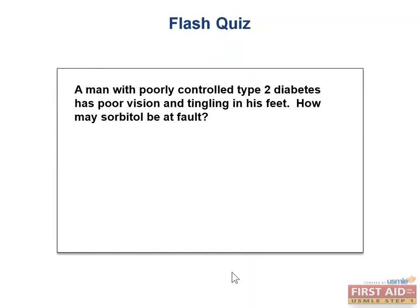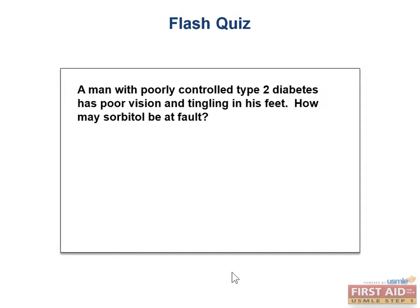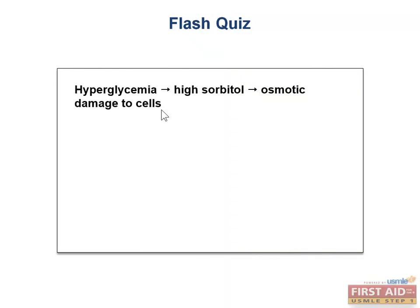Let's do a quick flash quiz. A man with poorly controlled type 2 diabetes has poor vision and tingling in his feet. How may sorbitol be at fault? Hyperglycemia can lead to sorbitol levels accumulating and causing osmotic damage within the cell. This is most prominent in cells that lack sorbitol dehydrogenase to break down sorbitol, including Schwann cells, the lens, the retina, and the kidney.